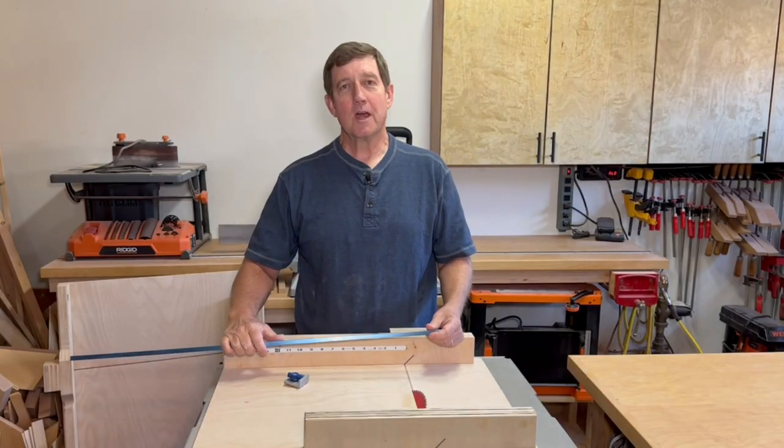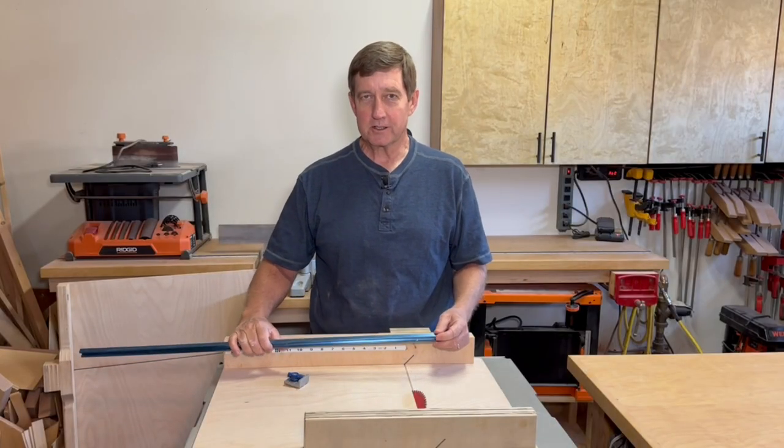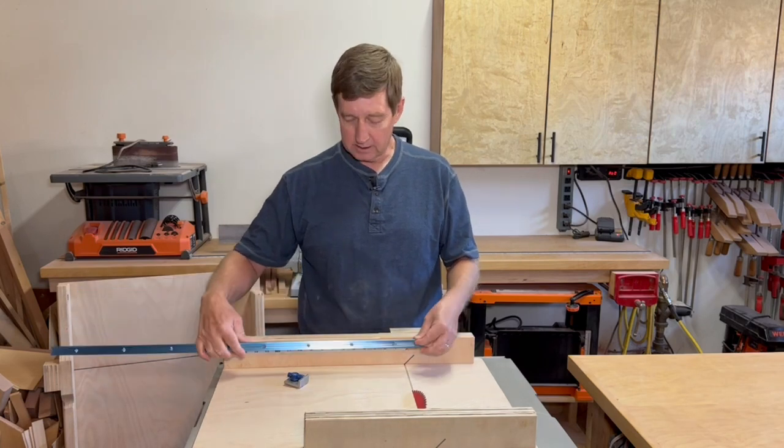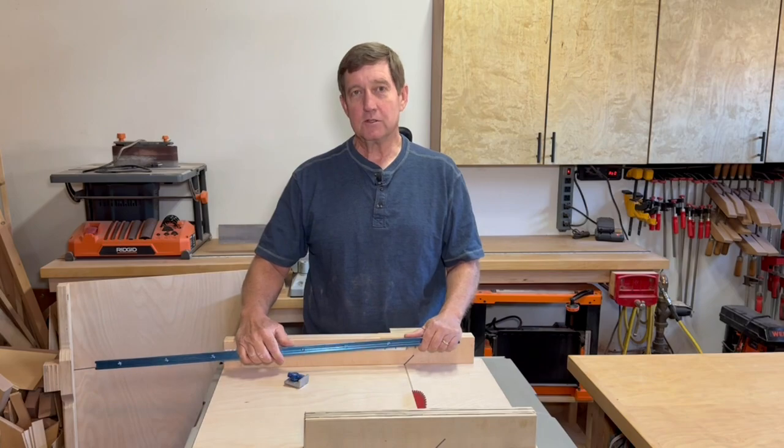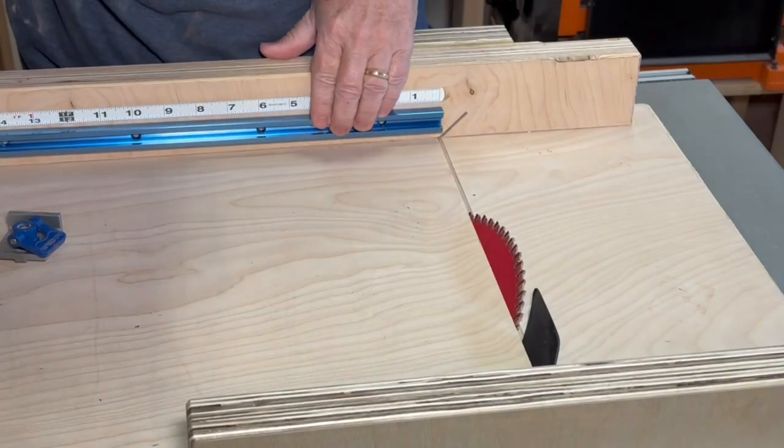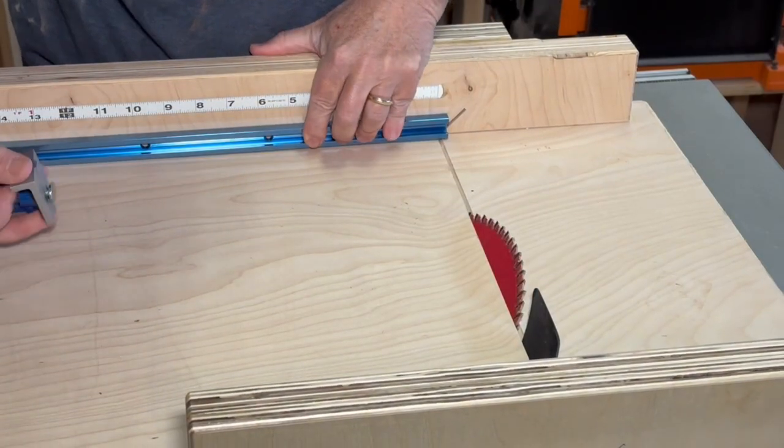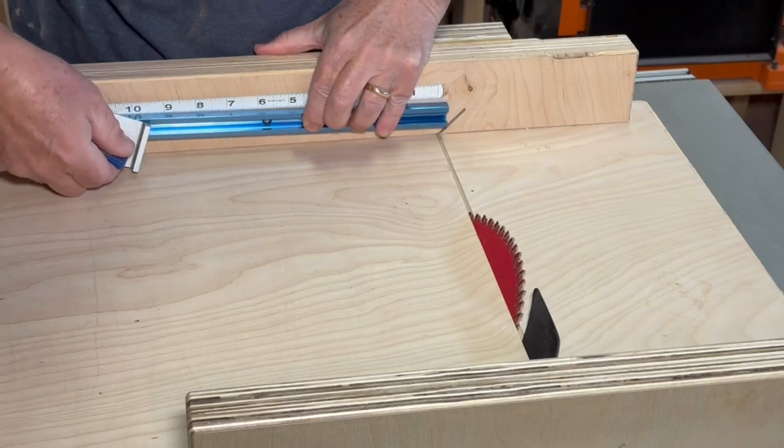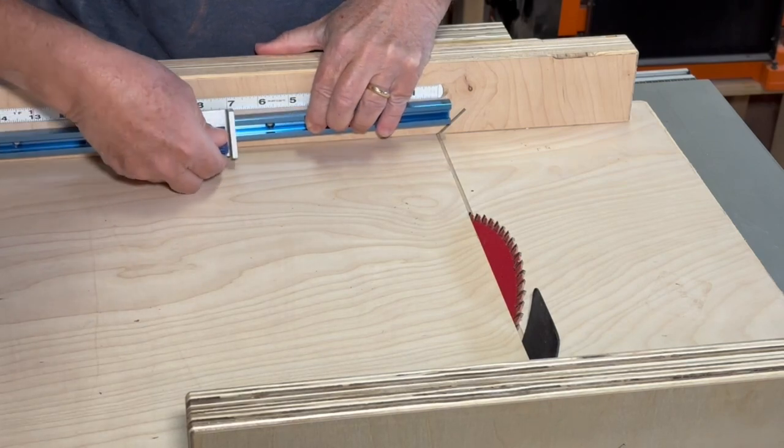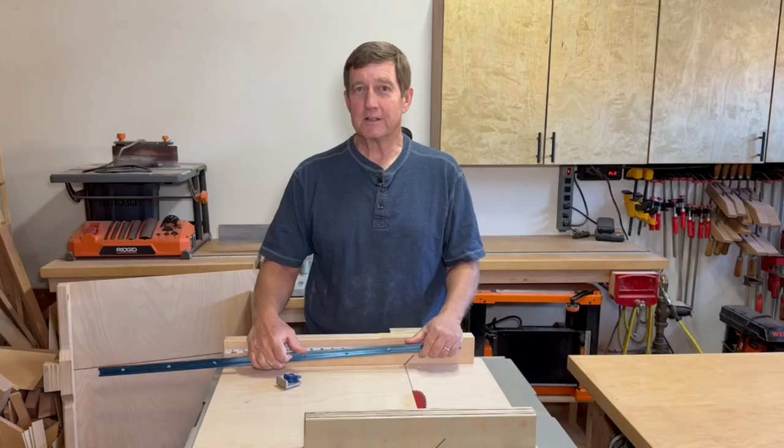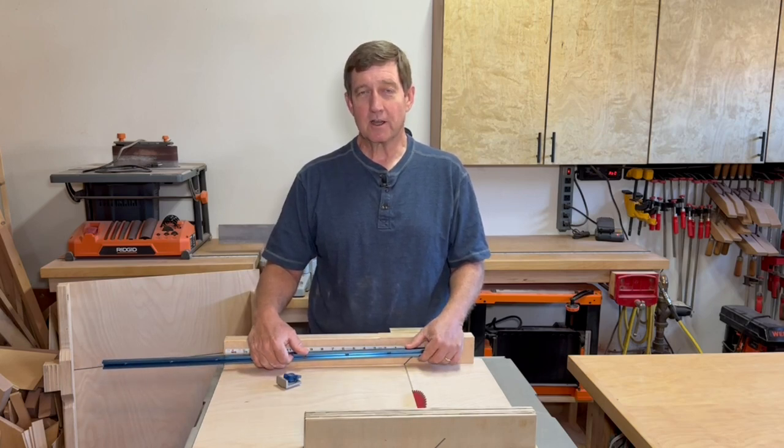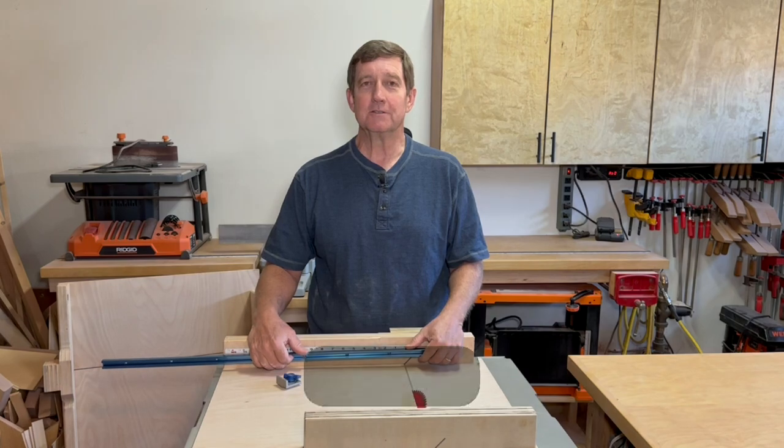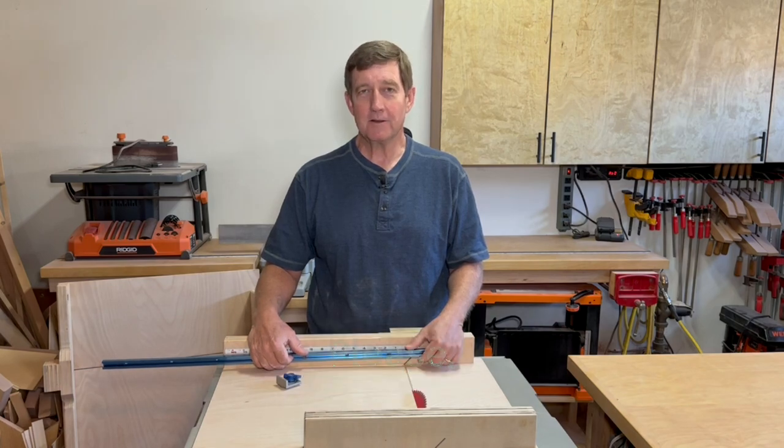So another option to consider when making a cross-cut sled is you may want to embed a T-track into the fence of the cross-cut sled. This saves you from having to use a clamp and a separate stop block because you can just use a T-track stop block like this instead. I didn't do it. I thought it was quite a bit of extra work for a very small benefit as opposed to just clamping on a stop block, but you wouldn't be wrong to do it. I think if I had it in there, I would use it.